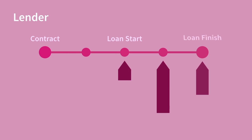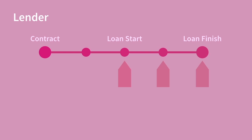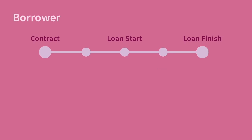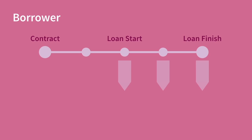One common use for FRAs is to lock in lending and borrowing scenarios. A lender might use an FRA to lock in a minimum return from an upcoming loan, to guarantee that each period they will receive some minimum interest amount. A borrower might use an FRA to lock in a maximum cost of a future funding, ensuring that their periodic funding cost will not exceed some fixed value.